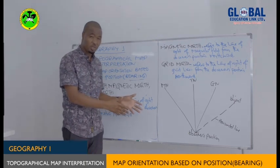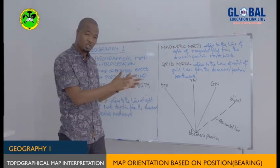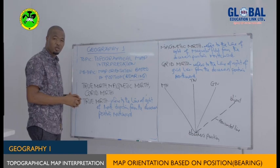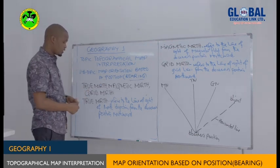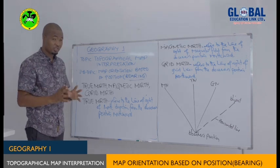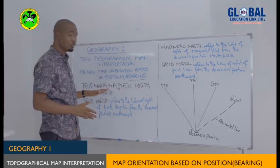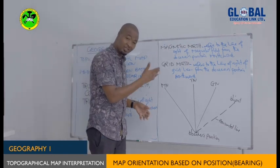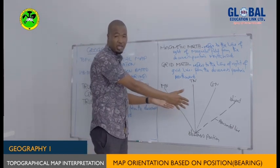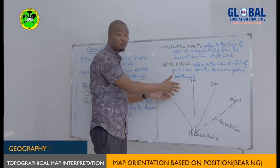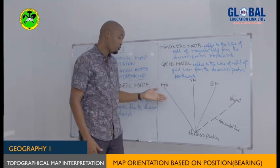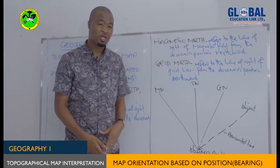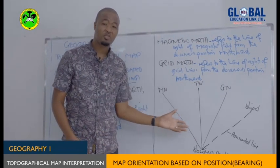We have seen forward and backward bearing. Now let's see some new concepts related to bearings. We have the true north, magnetic north, and the grid north. You have to listen very carefully on these three concepts, because after this we will talk about the magnetic bearing, magnetic variation, and the true bearing — which are the angles between these three lines. Before understanding the angles, you must understand the three lines themselves.